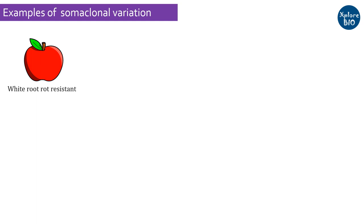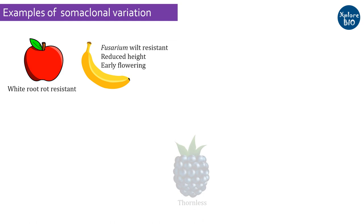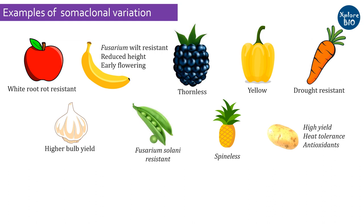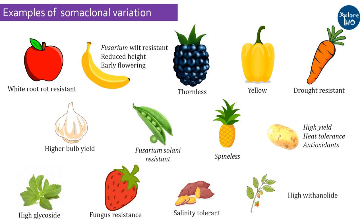Some examples of horticulture crop varieties developed through somaclonal variation include: apple showing resistance to white root rot; banana variety resistant to fusarium wilt with reduced height and early flowering; thornless blackberry; yellow capsicum; drought-resistant carrot; garlic with higher bulb yield; pea plant resistant to the fungus Fusarium solani; spineless pineapple; potato varieties with high yield, heat tolerance, and high levels of antioxidants; stevia containing high glycoside content; strawberry resistant to several fungal pathogens; salinity-tolerant sweet potato; and Withania somnifera, also known as Indian ginseng, with higher withanoid content.